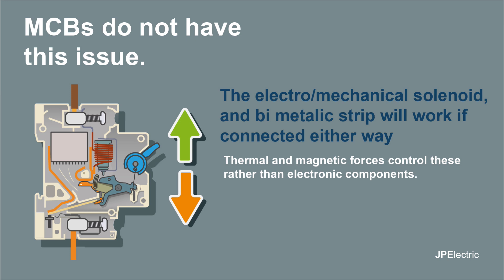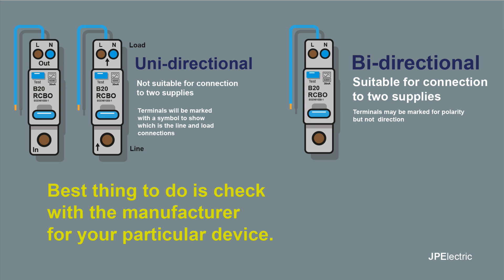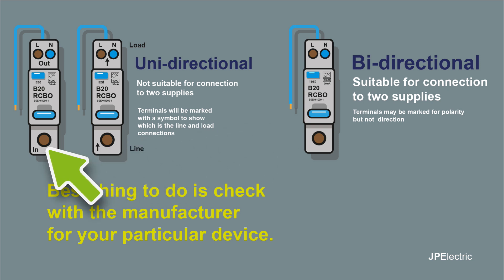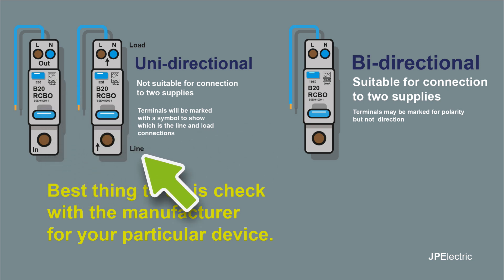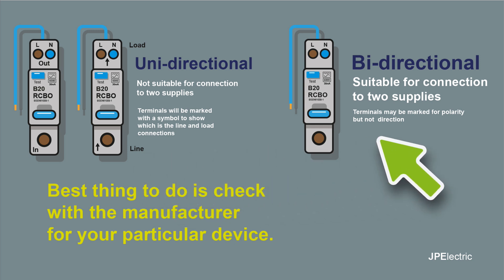MCBs generally don't seem to suffer from this issue, because they haven't got any electronic components which can fail. The solenoid and the bimetallic strip will work if connected either way. To identify which device is which: unidirectional devices have some indication of the flow of power — it'll say 'in' and 'out', or 'line' and 'load', so you know it's not suitable for two connections. A bi-directional device will not specify which is in and out or line and load, or have an arrow showing direction. You might get markings for polarity, but the best thing to do is check with the manufacturer for your particular device, because the markings may not be clear or obvious.